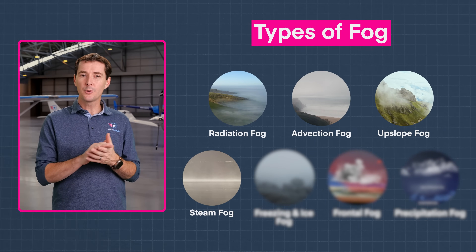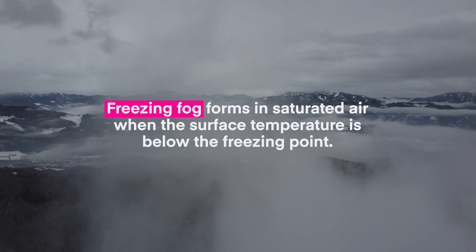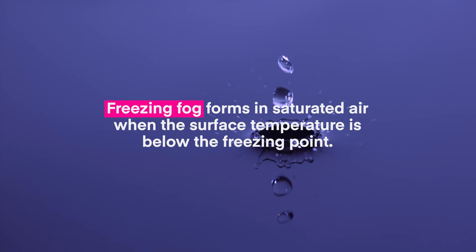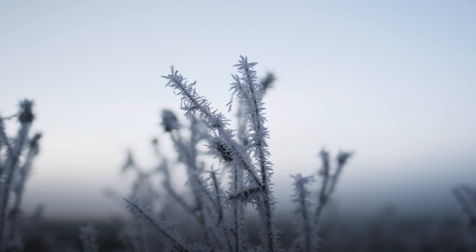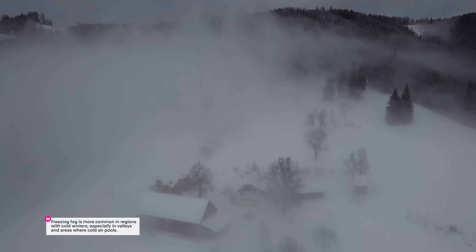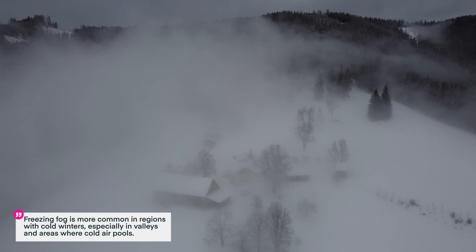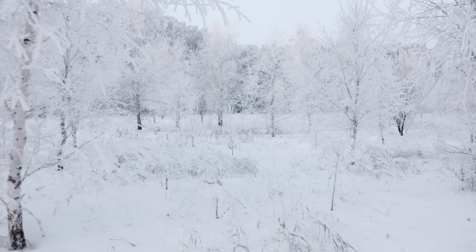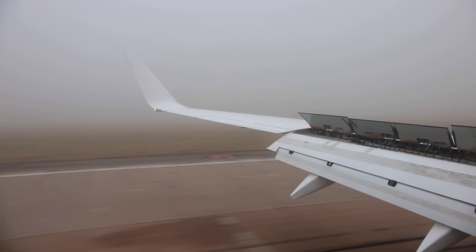Freezing fog forms in saturated air when the surface temperature is below freezing. The water droplets in freezing fog are called supercooled, meaning they are in a liquid state despite being below freezing temperature. They do not freeze in the air because they lack a nucleus or core around which an ice crystal can form. Freezing fog is more common in regions where winters are very cold, especially in valleys or areas where cold air is stagnant. The freezing temperatures cause the supercooled water droplets to freeze on impact with surfaces, creating rime ice either on the ground or possibly on your wing.